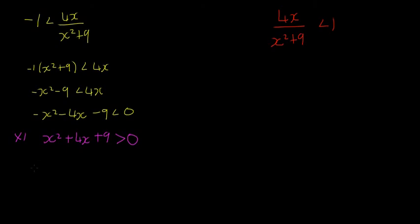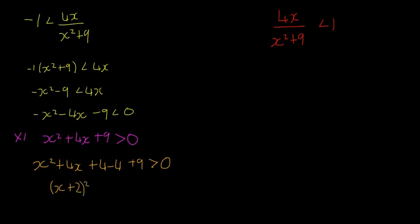To prove x² + 4x + 9 > 0, we complete the square. Write it as x² + 4x + 4 - 4 + 9 > 0. The first three terms form a perfect square: (x+2)². The remaining terms give +5. So we have (x+2)² + 5 > 0, which is always true because a squared number is always non-negative and 5 is positive — their sum must be positive.